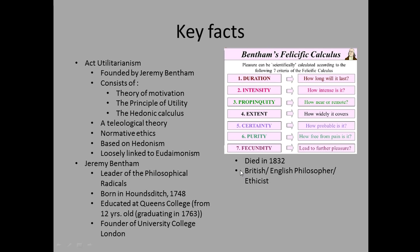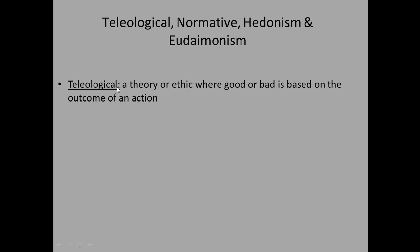What do these terms mean? Teleological is an ethic where good or bad is based on the outcome of an action — if the outcome is bad, that is what determines that the act itself was bad. Normative is a branch of ethics concerned with how we ought to act.